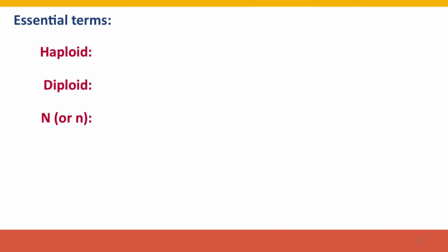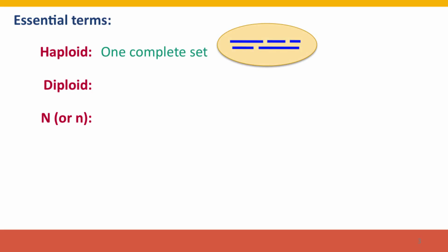First, the essential terms. Haploid and diploid are terms that describe the genetic constitution of cells in terms of their chromosome sets. A haploid cell has one complete set of chromosomes. Here I've drawn a set of five chromosomes as a complete set. The chromosomes are distinguished by having different lengths.